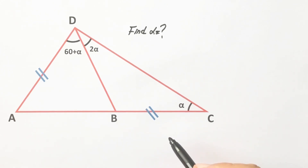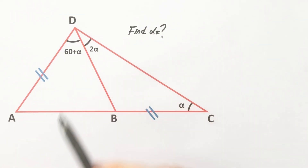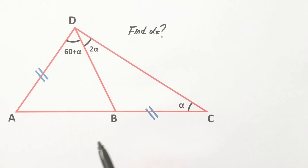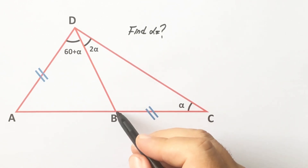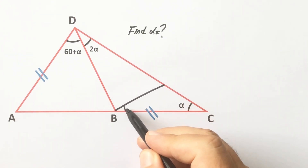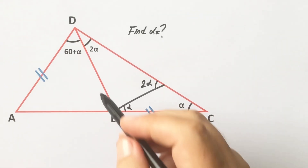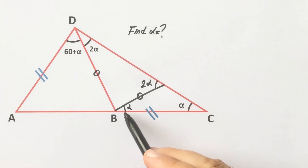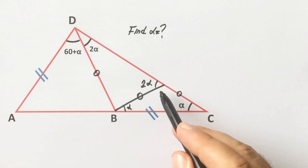In this video we have one triangle with angles alpha, two alpha, and 60 plus alpha. These two parts are equal and alpha is what we need to find. If we create an isosceles triangle here, two sides must be equal. This triangle is also an isosceles triangle, so this part must be equal to the others.